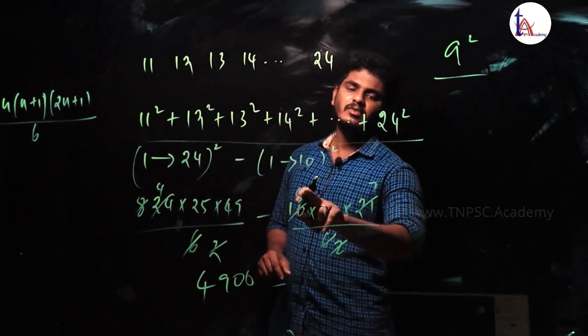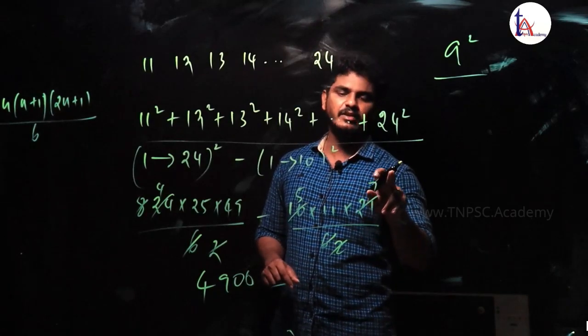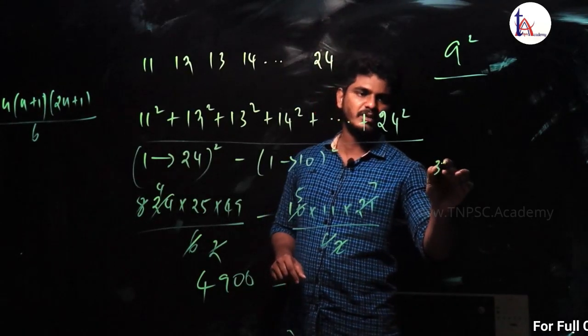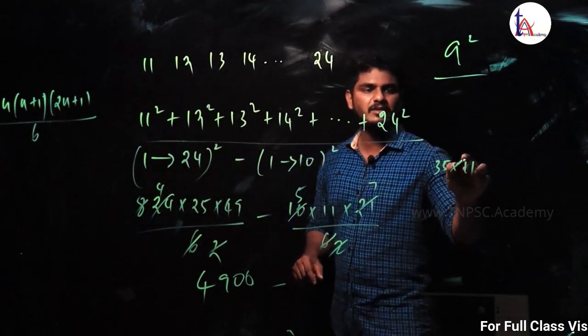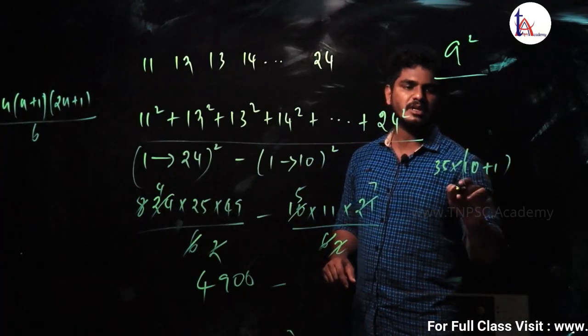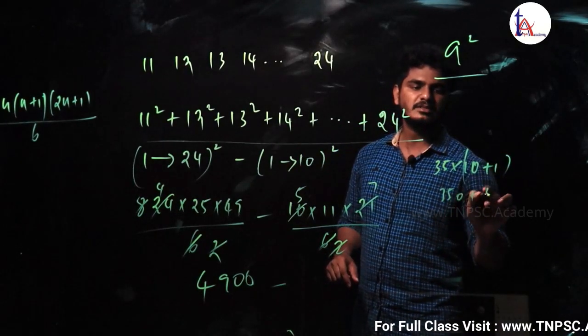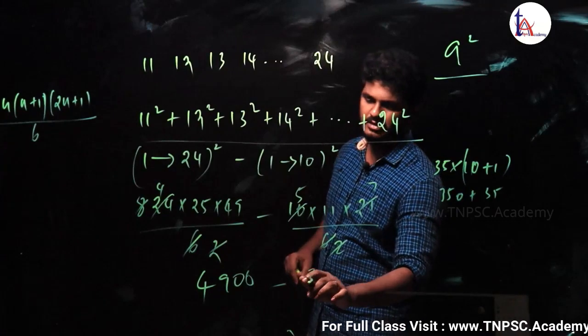Okay. So if we cancel this multiply, 5, 7s are 35, 35, 11s are. So 35 into 11, so this 11 is a derivative rate. 10 plus 1 divided by 3, 50 plus 35, 3, 85.